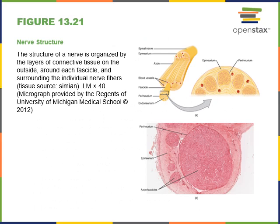A nerve is organized with three layers of connective tissue. An outermost layer of fibrous connective tissue called the epineurium surrounds the entire nerve. Inside the nerve are bundles of axons called fascicles, and each fascicle is surrounded by a layer of fibrous connective tissue known as the perineurium. Inside each fascicle, each nerve fiber or axon is surrounded by a layer of loose areolar connective tissue called the endoneurium, which also surrounds the Schwann cells — the glial cells that support the axon and produce myelin insulating myelinated axons in the peripheral nervous system.